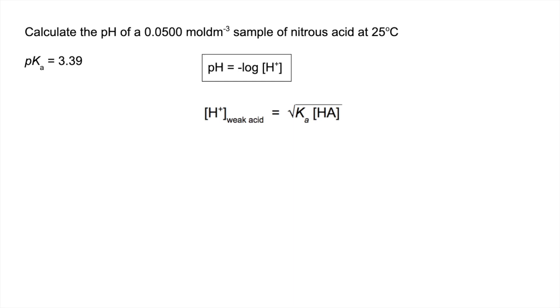So we need to turn that into Ka using 10⁻ᵖᴷᵃ. We get a Ka value, then plug the numbers into the expression. H+ concentration is the square root of those numbers. The H+ concentration comes out, and minus log gives us a pH of 2.35 to two decimal places.